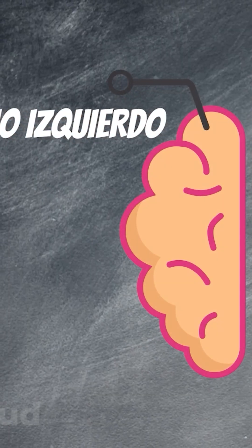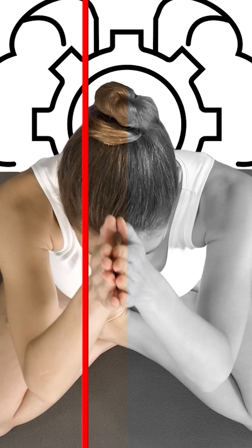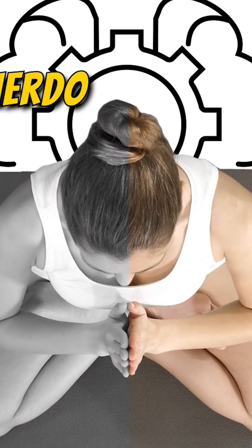Half of what you see goes to each hemisphere, and half of your movements are controlled by each one. The right hemisphere controls the left side of your body, while the left controls the right side.